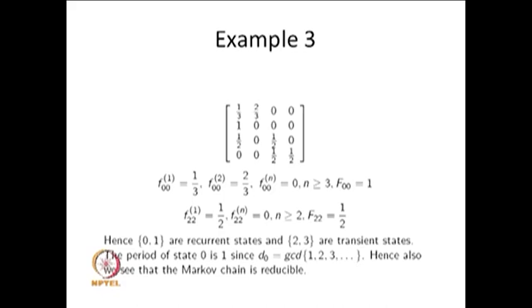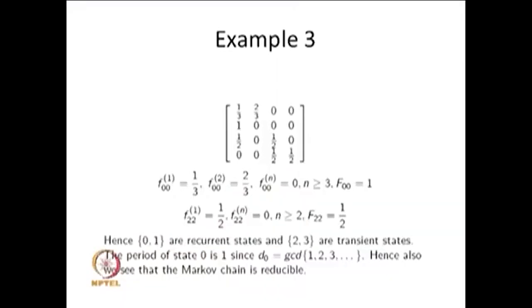To find the periodicity D(0): we take the GCD of all steps in which the system can return to state 0 — it can return in 1 step (self-loop), 2 steps (0→1→0), 3 steps, 4 steps, and so on. The GCD of {1, 2, 3, 4, ...} is 1. Therefore state 0 is aperiodic. Similarly D(1) = 1, so state 1 is also aperiodic. Both states 0 and 1 are positive recurrent and aperiodic.